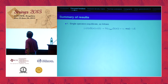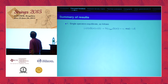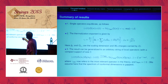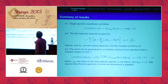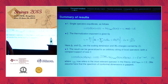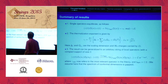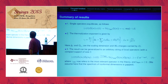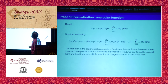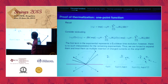Summary of results: single operators equilibrate and the thermalization exponent has a first term which is the Calabrese-Cardy term, plus additional terms getting contributions from the chemical potentials and the W_infinity charges of these operators. This result can be generalized to an arbitrary string of operators, giving new universal relations. Let me give some glimpse of the proof.